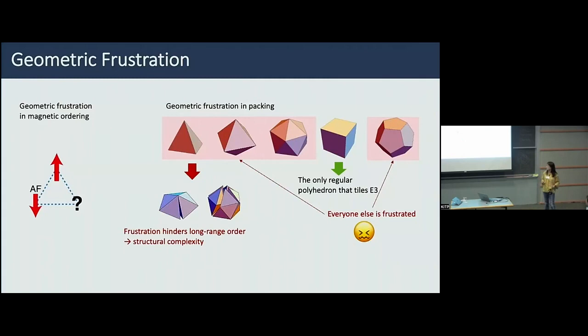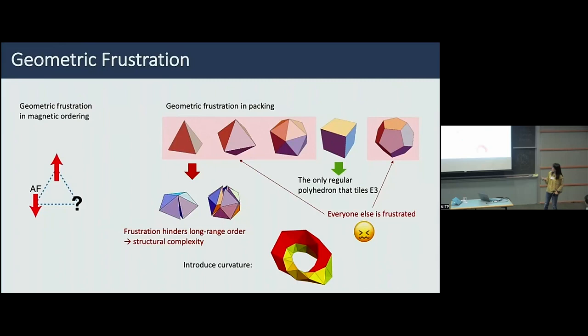Interestingly, we can mathematically describe this problem by recognizing that the frustration with these shapes is an artifact of the flat space we live in. If you introduce a little bit of curvature in space, you can close these gaps and get perfect crystals from geometrically frustrated shapes.